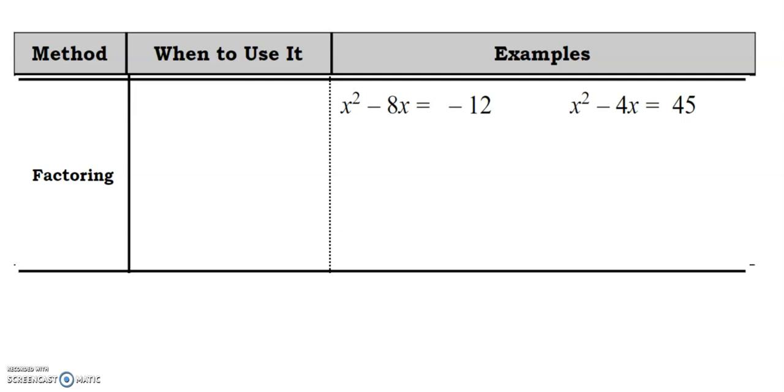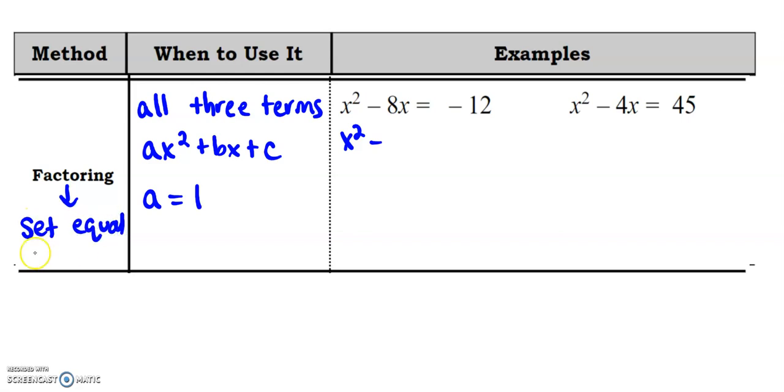When should you use factoring? Well, typically easiest is when you have all three terms. So you've got ax squared plus bx plus c and a is one. All right. So if I move this over, I get, oh, and just as a side note, whenever you factor, you need to be set equal to zero. That's a rule for factoring.